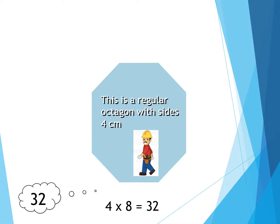We could also say four times eight is 32. The perimeter of this shape is 32.